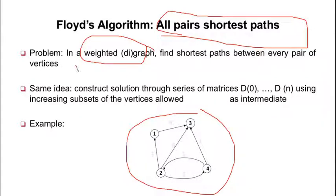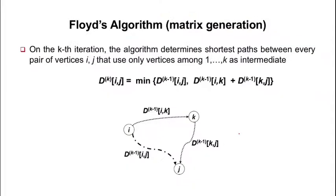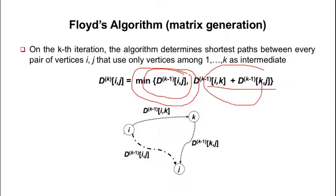With the same idea as the closest pair just now, the graph without weight, here we have weight and use the same concept of transitive closure to find the shortest path for all pairs. Same idea: construct the solution through a series of matrices D0, D1, ..., Dk, using an increasing subset of vertices allowed as intermediates. We update using the minimum of D(k-1)[i,j] versus D(k-1)[i,k] plus D(k-1)[k,j], similar to finding if there is any intermediate vertex k for pair i,j.